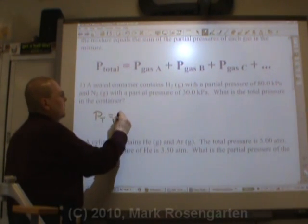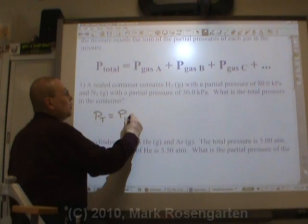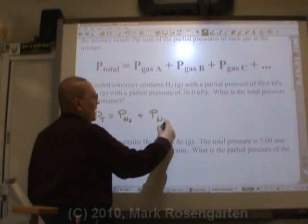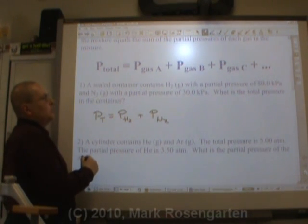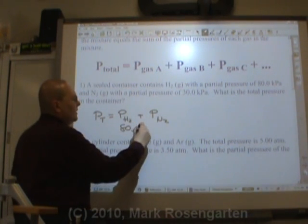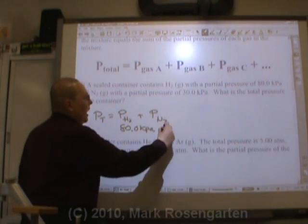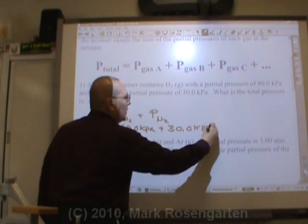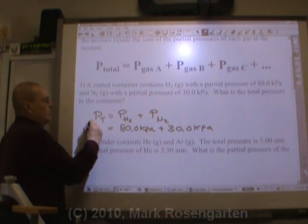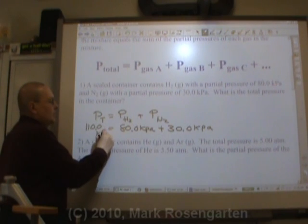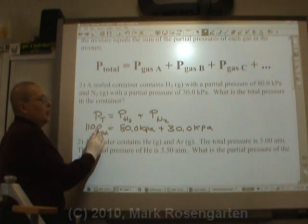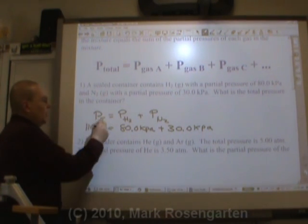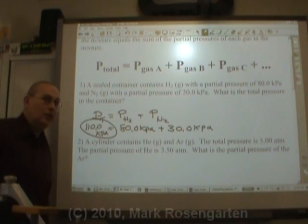Well, the total pressure of the container is going to equal the pressure, the partial pressure of the hydrogen gas, plus the partial pressure of the nitrogen gas. Since the hydrogen has pressure of 80.0 kilopascals, and the nitrogen has a partial pressure of 30.0 kilopascals, that adds up to 110 kilopascals. Want to put the .0 there? Because when you add tenths place plus tenths place, you have to end with tenths place. So 110.0 kilopascals is the total pressure.